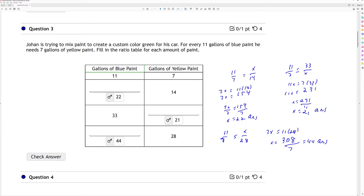So I cross multiply. 11 times 14 is 154, and I divide both sides by 7. x is 22.